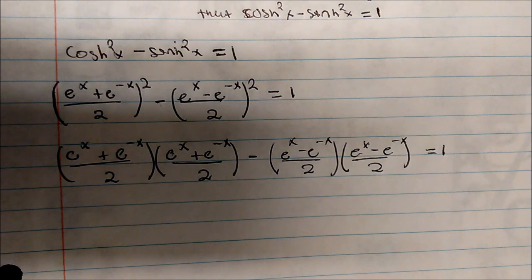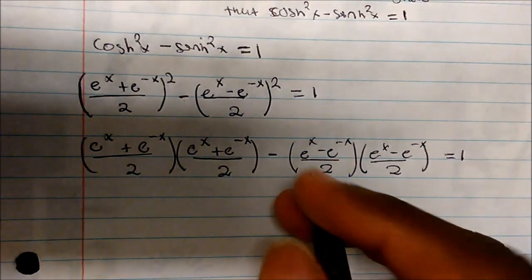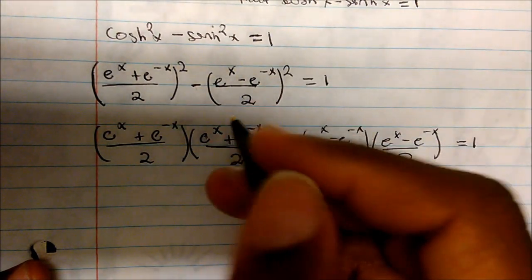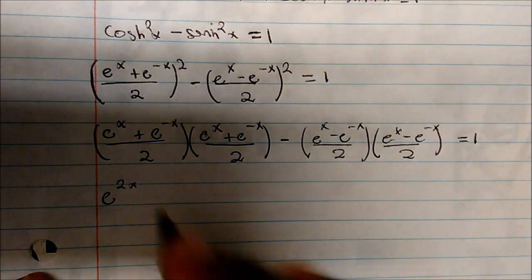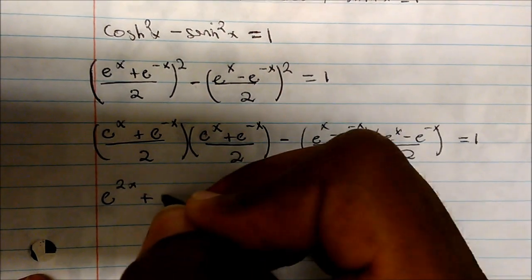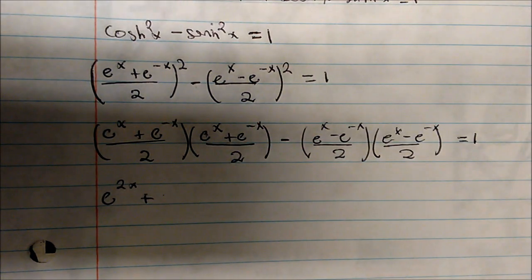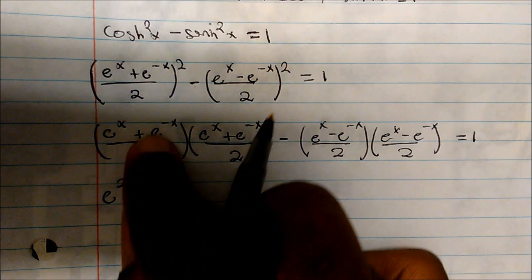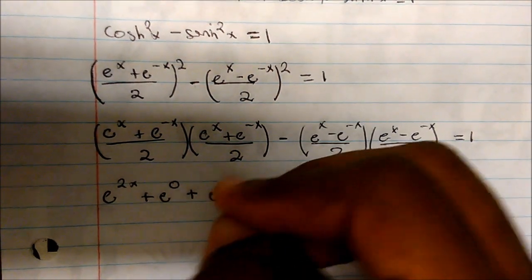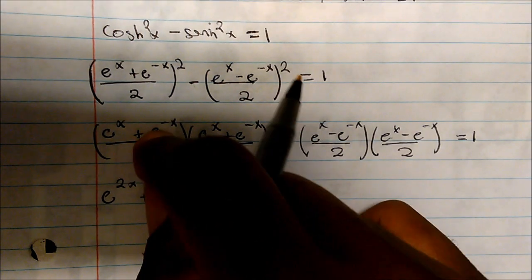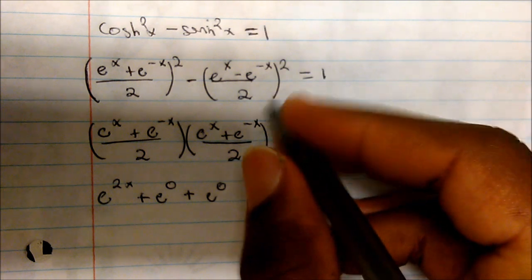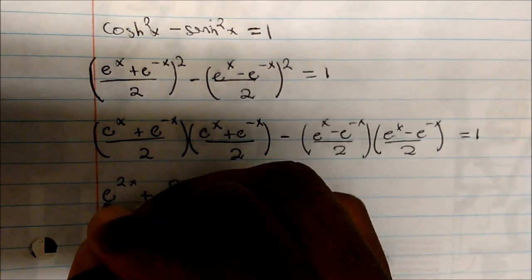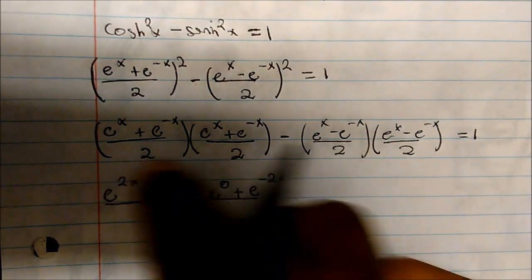Now let's multiply across. Our denominator is going to be 4. So e to the x times e to the x gives e to the 2x — we just add our exponents. Plus e to the x times e to the negative x, where our exponents are subtracted, giving e to the 0. Plus e to the negative x times e to the x, which is again e to the 0. And e to the negative x times e to the negative x gives e to the negative 2x. This is all over 4.